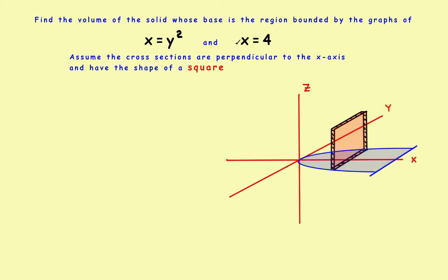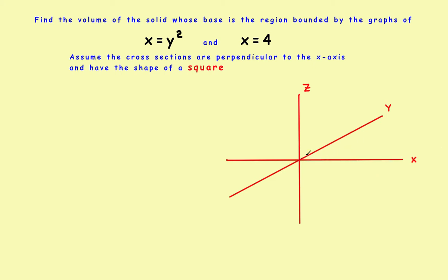One problem students have is going from the words that describe the problem to the final sketch. So let's deconstruct the sketch and redo it to show how you get from the words to the final drawing. We'll remove this section and the base, and start with just the XYZ axis.